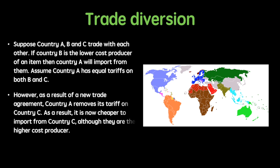However, as a result of a new trade agreement, country A removes its tariff on country C. As a result, it is now cheaper to import from country C although they are the higher cost producer. This increase in trade with a higher cost producer is called trade diversion.